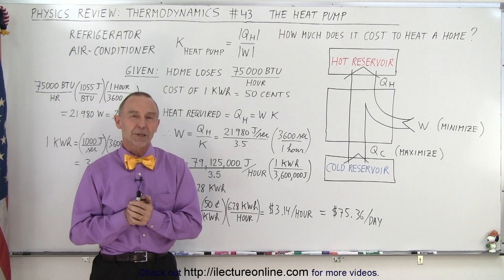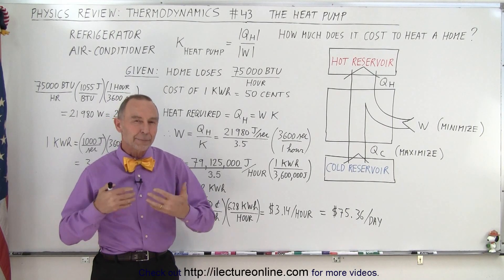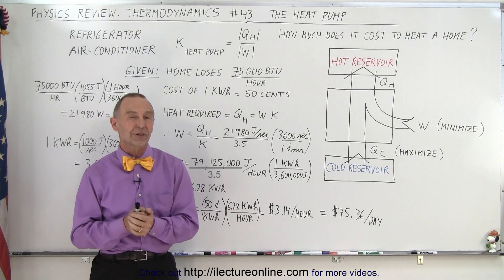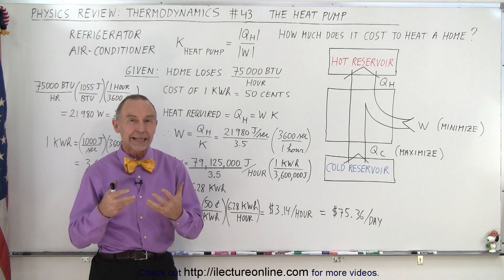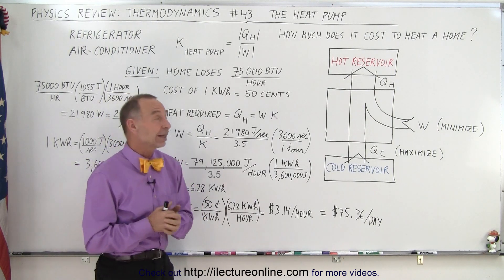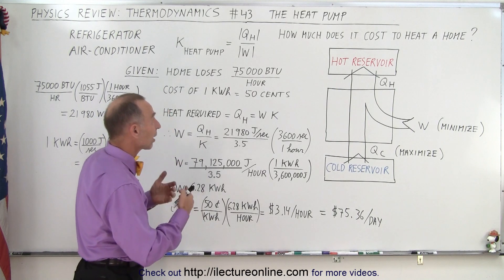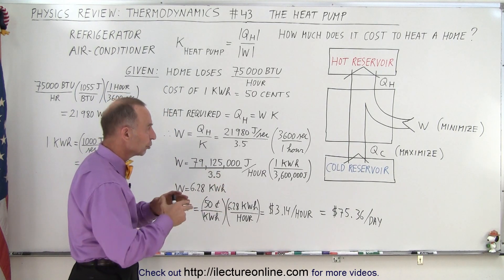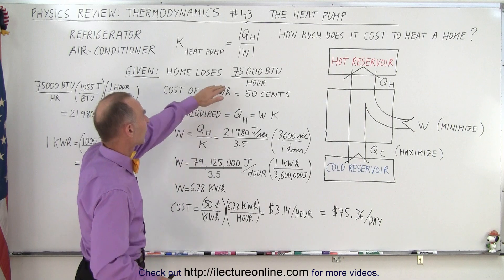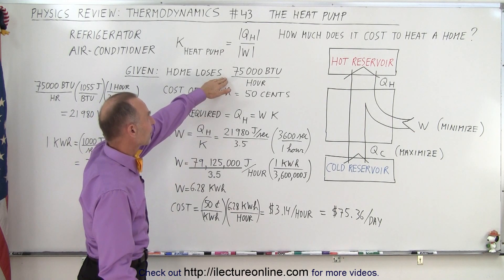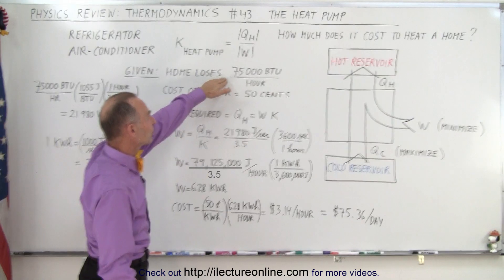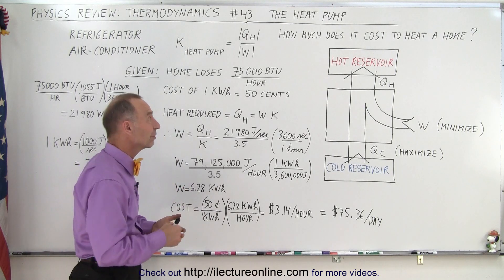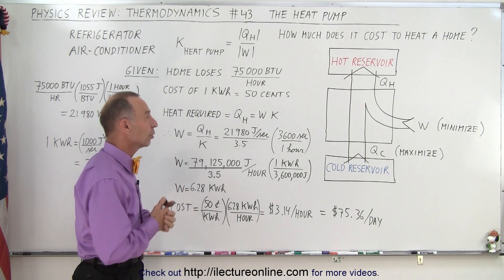Welcome to iLectra Online. To get a better understanding of the coefficient of performance, let's talk about the heat pump that heats a house. Let's say that the house requires a certain amount of heat per hour to keep it at a certain temperature, and let's say that the house loses 75,000 BTUs per hour, so we have to infuse 75,000 BTUs of heat into the home.